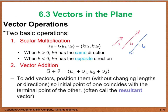For vector addition, we add corresponding components: U1 plus V1, and U2 plus V2. When adding vectors on a graph, we move them without changing their lengths or directions, aligning the initial point of one vector with the terminal point of another. The resulting opposite side is called the resultant.